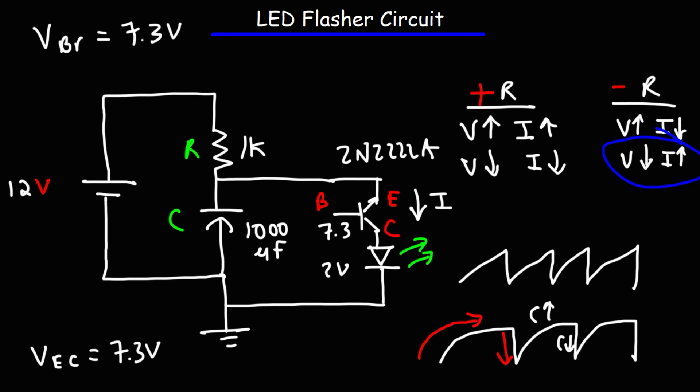Now, the next thing we need to talk about is the frequency or the flash rate. The values of R and C controls the frequency, the rate at which the LED will flash on and off. If you want to increase the flash rate, there's two ways you can do that. You can do that by decreasing R and the frequency will go up. Or you could decrease the capacitance and you could increase the frequency and thus the flash rate of the LED.